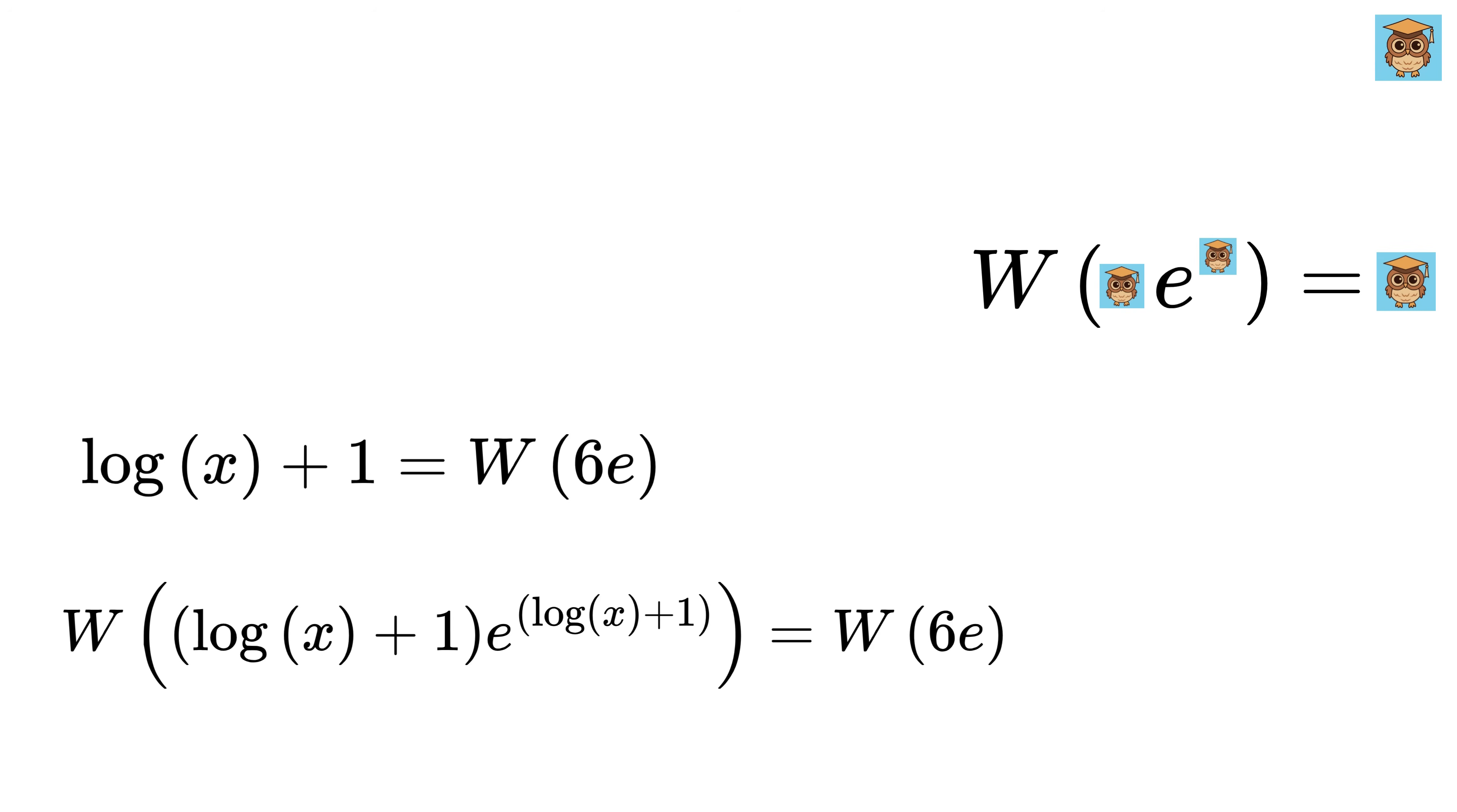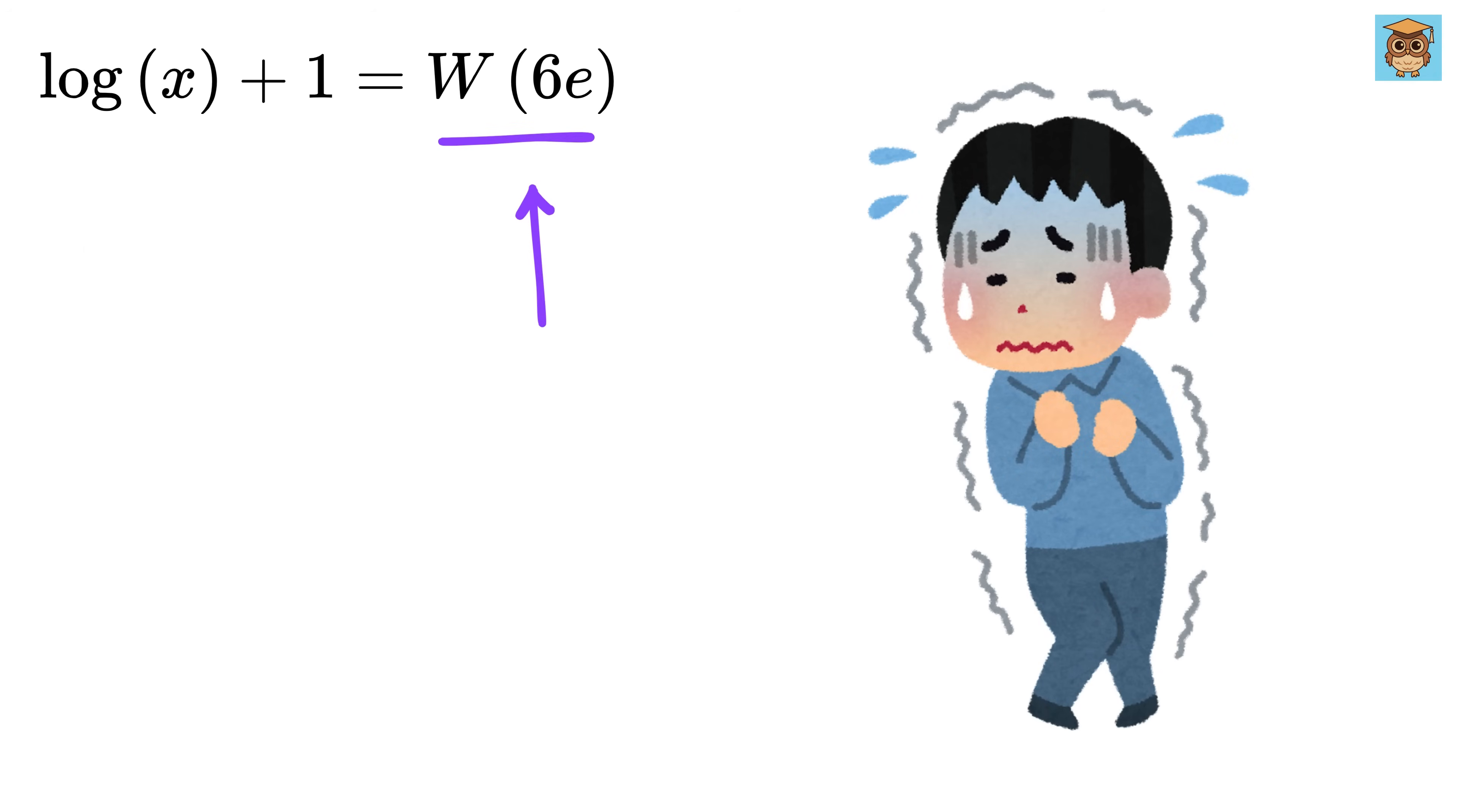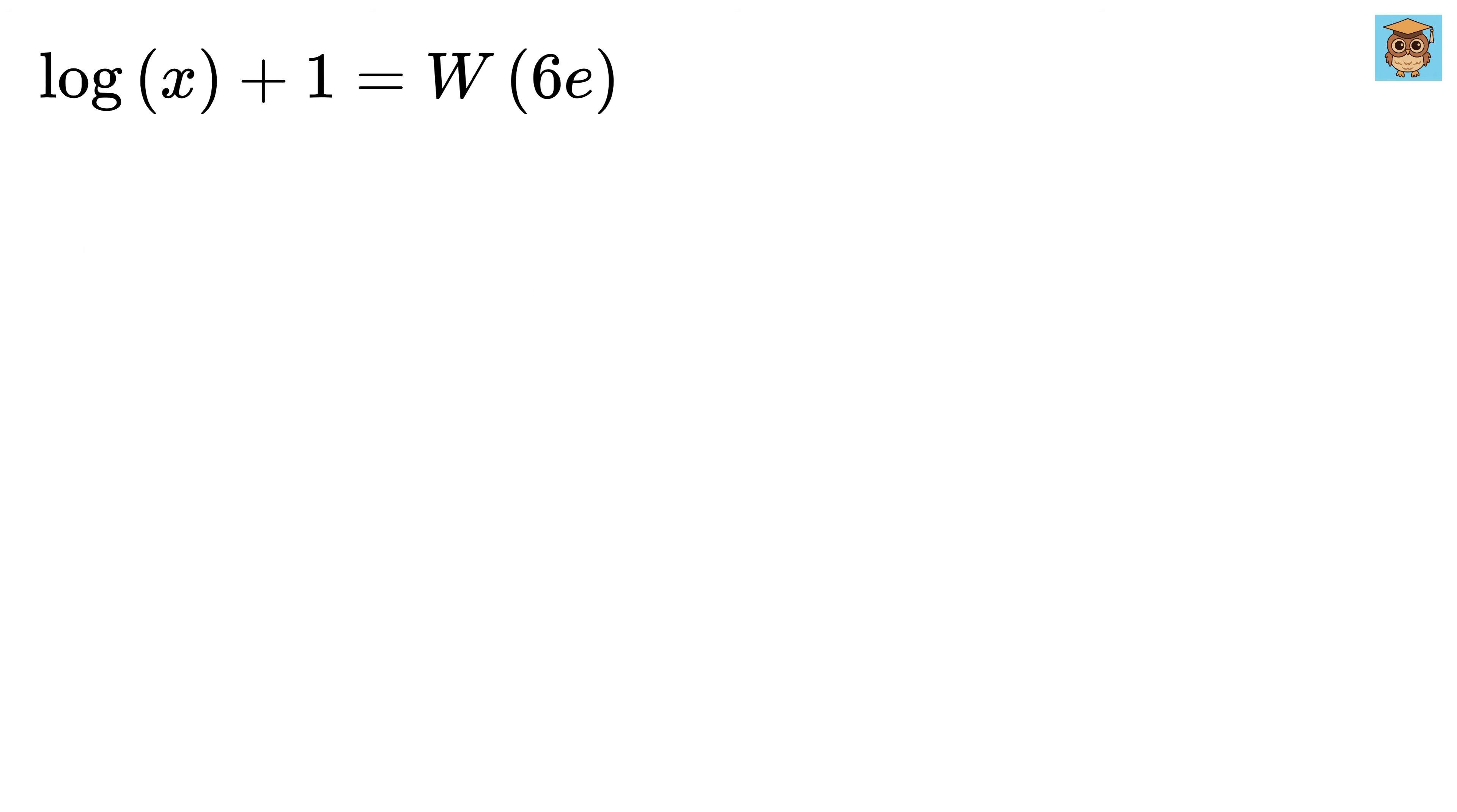Don't be afraid of this thing as it's just a constant. Now subtract 1 from both sides to get log of x equals W of 6 times e minus 1. And finally, raise e to both sides to get x equals e to the power W of 6 times e minus 1.